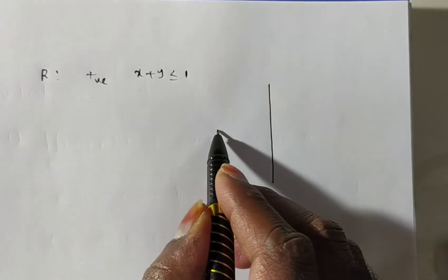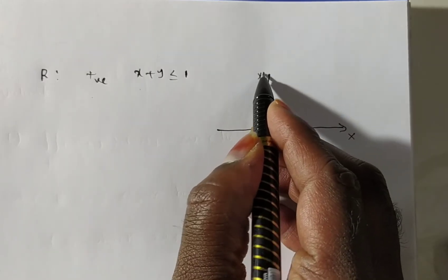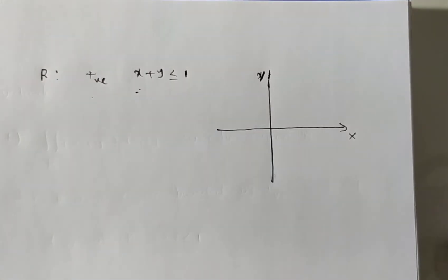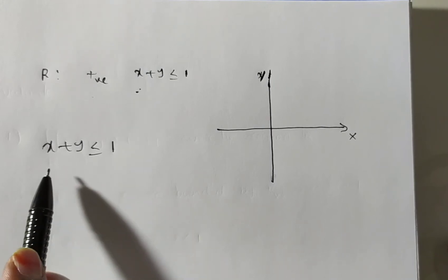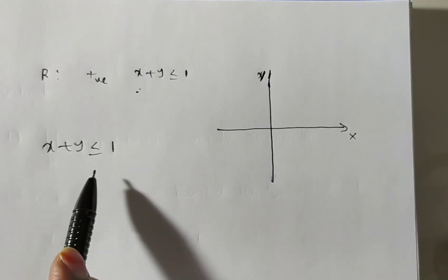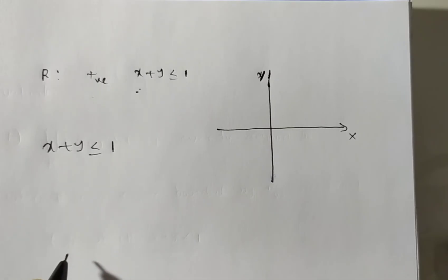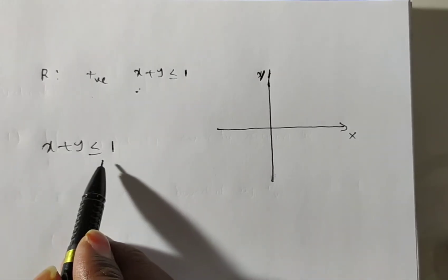First I am drawing the xy plane. This is the x axis and y axis. Now we have to find out the points on x plus y equal to 1. To find the x value, we put y equal to 0. To find the y value, we put x equal to 0. This is what we studied in previous classes — how to sketch a graph for a line like x plus y equal to 1.